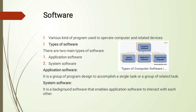Here we'll discuss only two main types of software: application software and system software. Application software is a group of programs designed to accomplish a single task or a group of related tasks. System software is background software that enables application software to interact with each other.